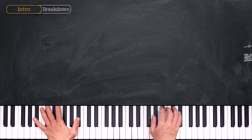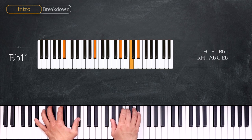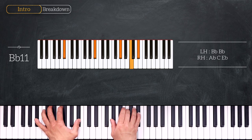We start by playing Bb11. So we have octave Bb on the left hand and Ab, C, Eb on the right hand. You can also view this chord as an Ab major over Bb.